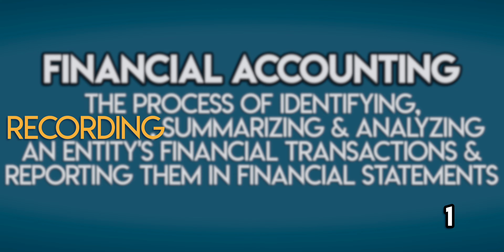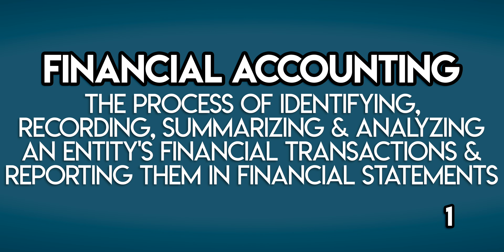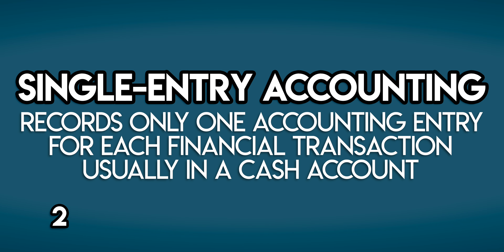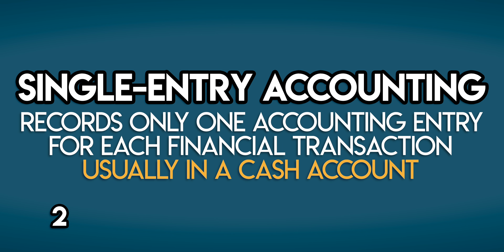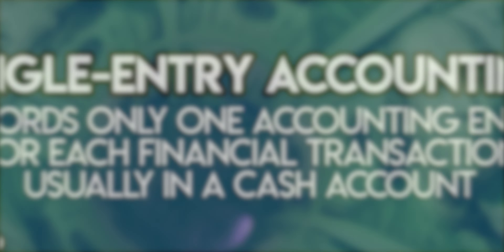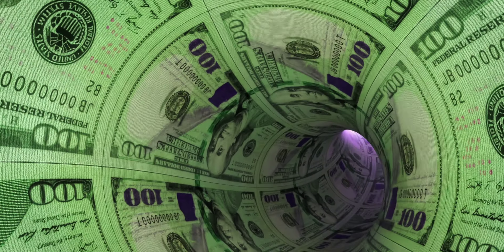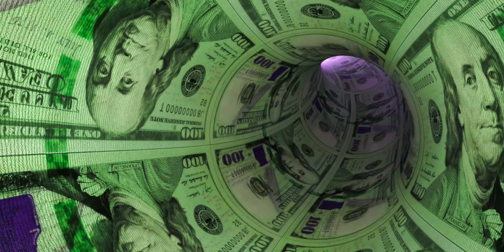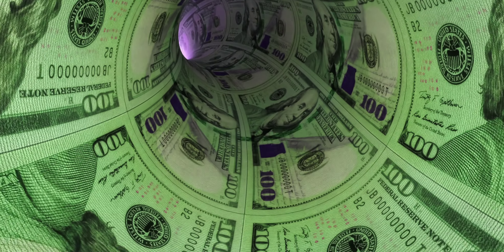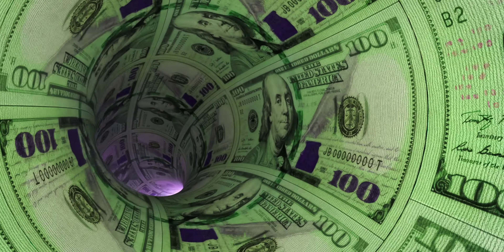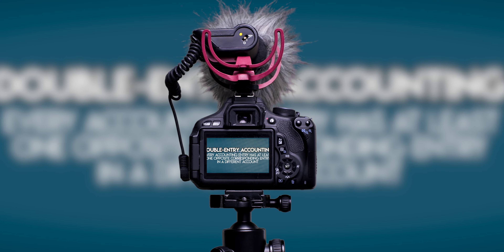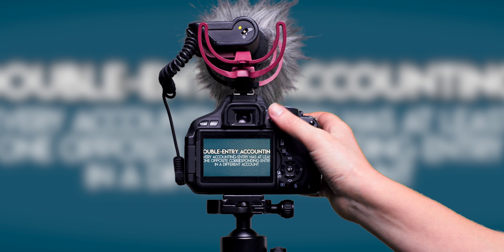There are a couple of ways to do that. The simplest way is to use the single entry accounting method. In single entry accounting, we only record one accounting entry for each transaction, usually in a cash account. When cash comes in, you record revenue, and when cash goes out, you record an expense. It's straightforward, but it doesn't give you a complete picture of your business.